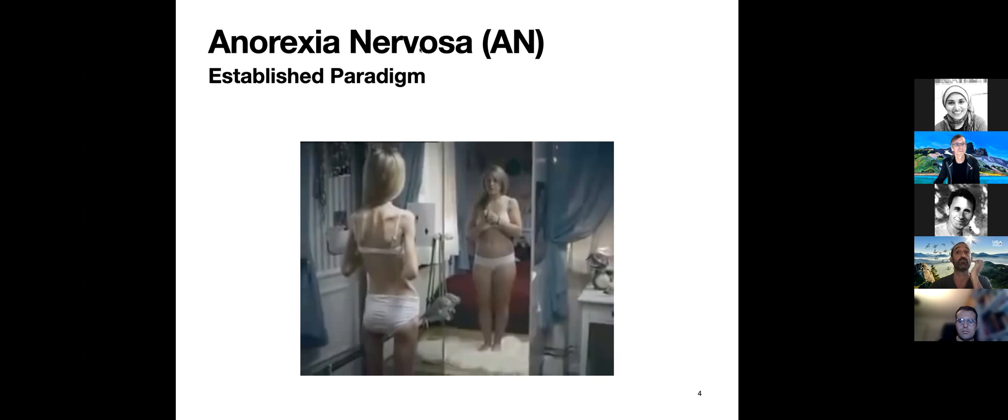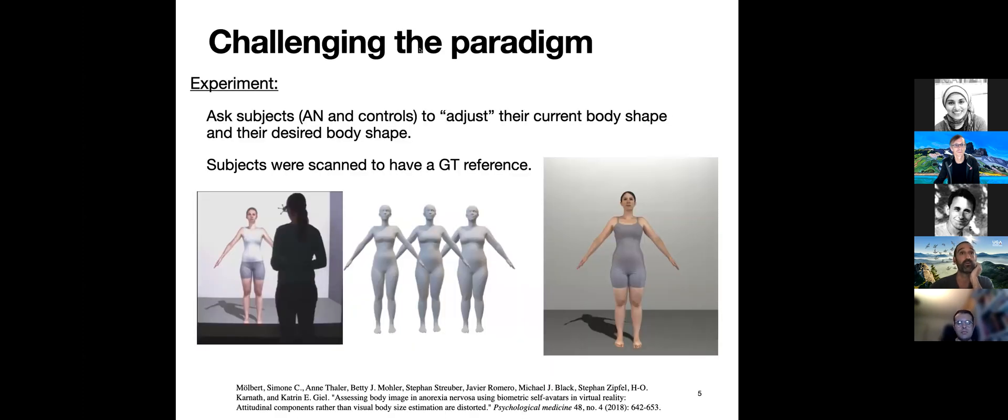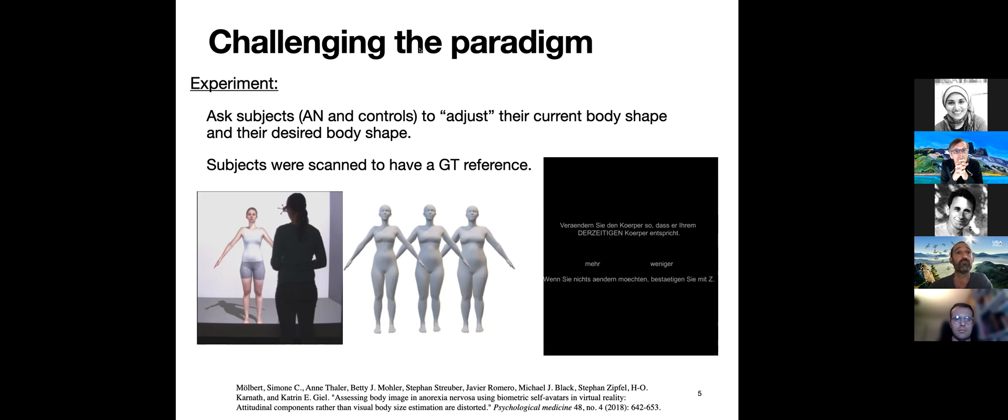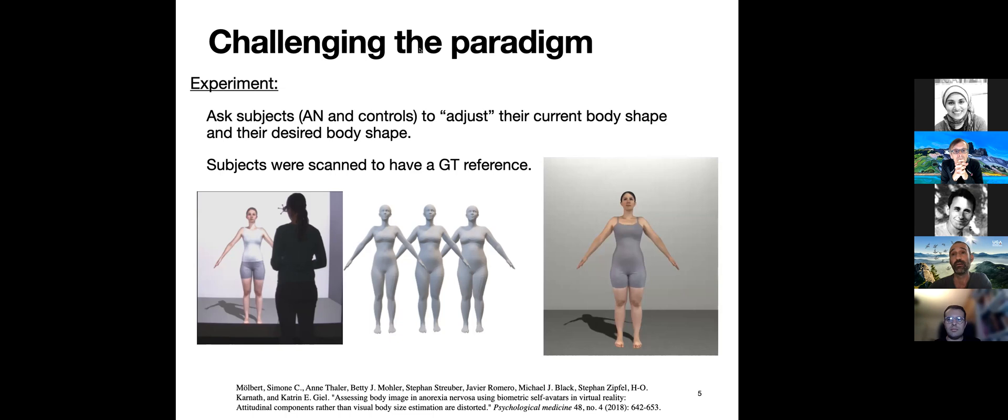This was an established paradigm in anorexia nervosa. Around 2018, there were experiments mainly conducted by Simone Mölbert, now Simone Behrens. The experiment challenges this paradigm. We asked subjects with anorexia nervosa and healthy controls to adjust their current body shape and their desired body shape. Subjects were scanned to have a GT reference. On the left is the VR setting where the person is adjusting the shape of a body. With this beta space, you can change the weight or appearance. On the right is an example of somebody manipulating this body in real time, perceiving it in 3D, and adjusting the body to what they think is their body and what they would like it to be.